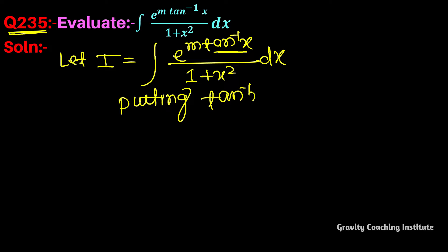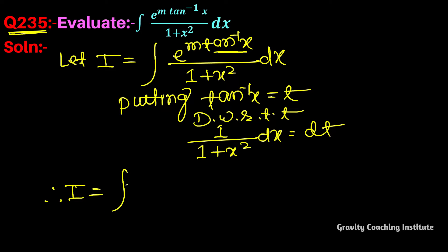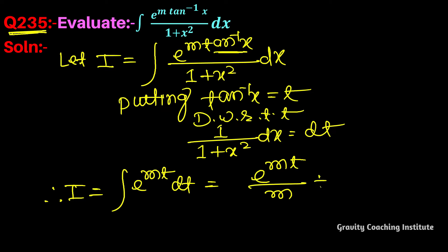Putting tan⁻¹x equal to t, and differentiating with respect to t: the derivative of tan⁻¹x is 1 upon (1 + x²) dt. Therefore, I equals the integration of e to the power mt, where 1 upon (1 + x²) dx becomes dt. The integration gives e to the power mt divided by m, plus c.